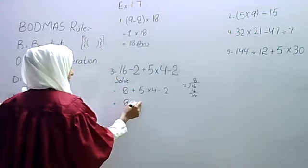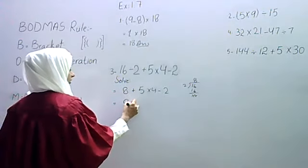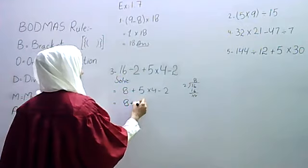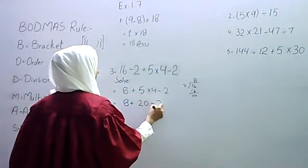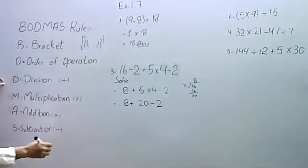8, left to right, multiply. 5 multiply by 4, 5 quarters of 20. Then minus 2. What do we do next?